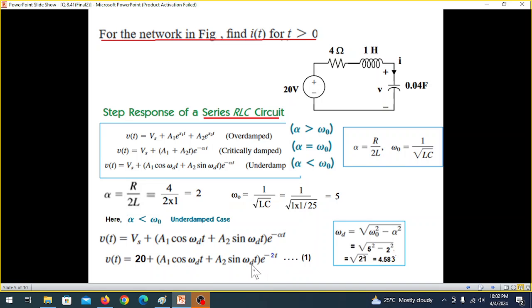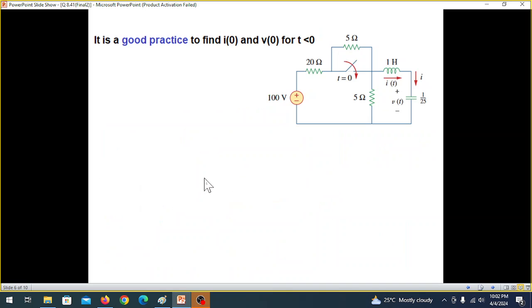And just a point to note, omega d is omega square minus alpha square under root. And solving its value is 4.583. But at this point, we'll not be using this value. Because it is difficult to keep on writing the decimal point. So we'll keep it like this. And at the end, we'll plug in the value.